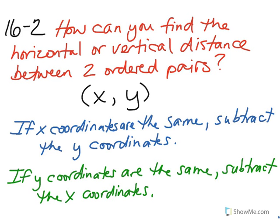So to get back to the focus question, how can you find the horizontal or vertical distance between two ordered pairs? If the x coordinates are the same, you're going to subtract the y coordinates. If the y coordinates are the same, you're going to subtract the x coordinates.